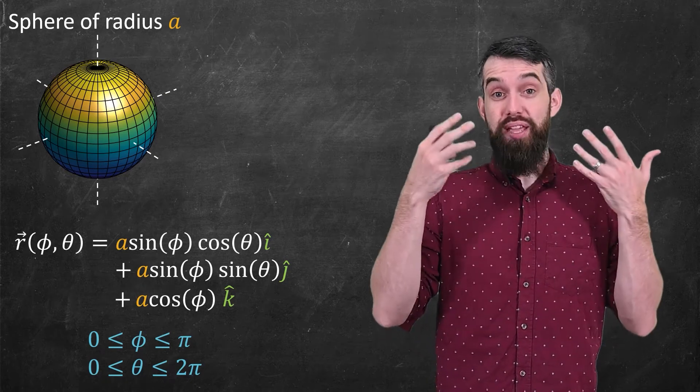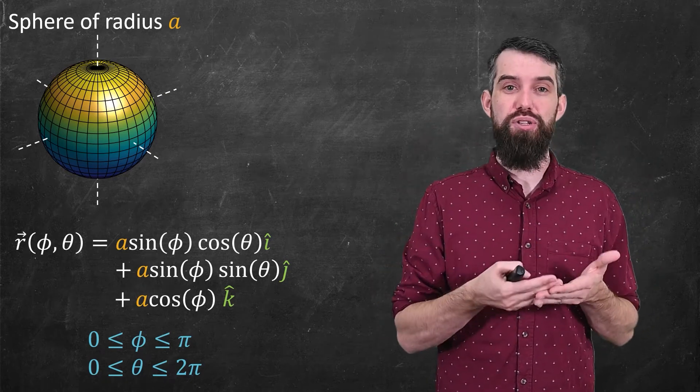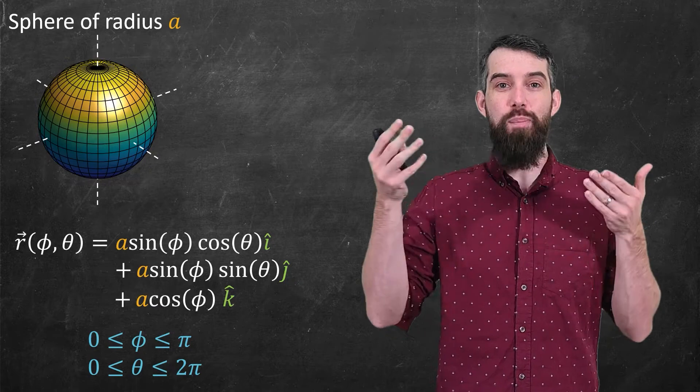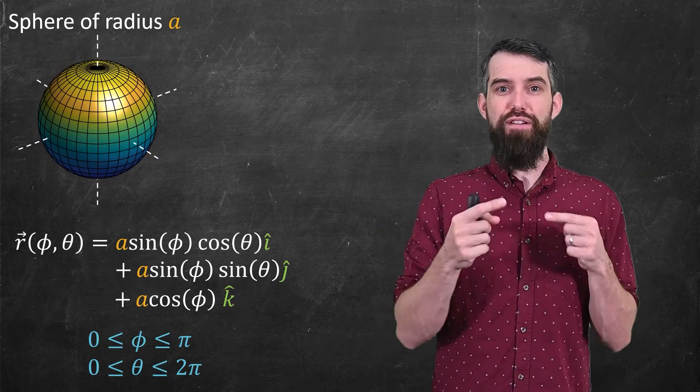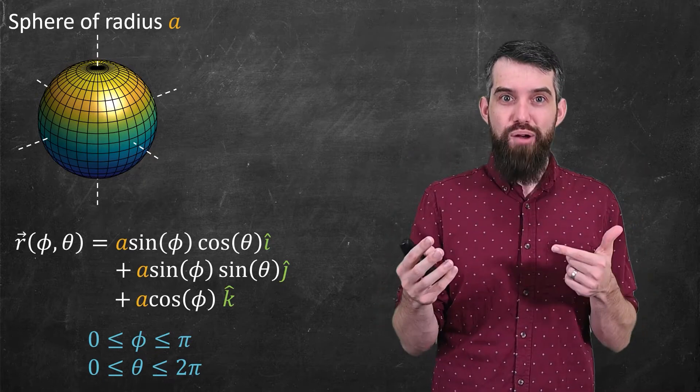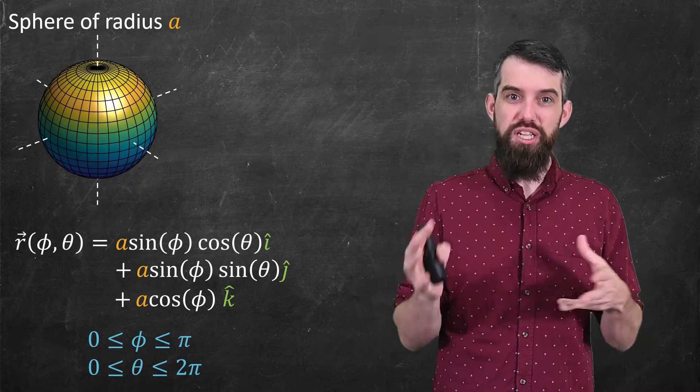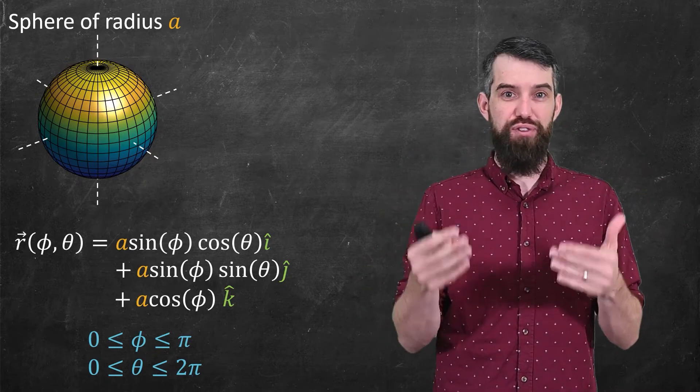And I had to be careful to specify what the limits are on my two parameters, so φ is going between zero and π, and θ between zero and 2π. The fact that φ just only went to π was to sort of avoid double counting points, it's sort of a weird quirk of spherical geometry.